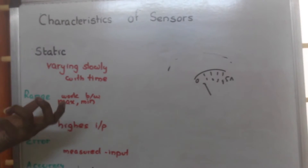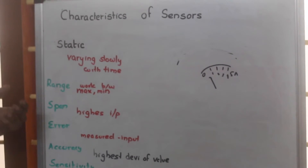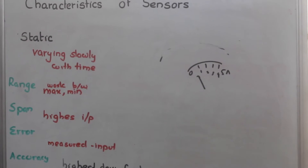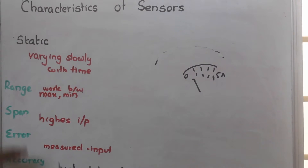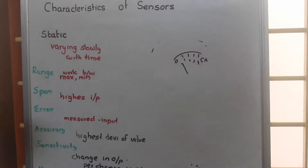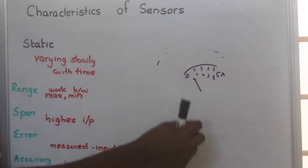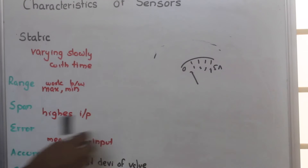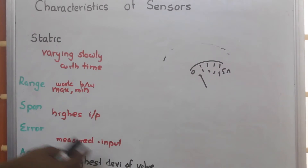So, characteristics of sensors. Here we are going to discuss static characteristics of sensors. Static characteristics means those characteristics which are not changing with respect to time. If at all there is a change, that change will be very slow. Suppose here in discussing static characteristics, there are several characteristics we are going to discuss with an ammeter. In an ammeter, we are able to measure the current from 0 to 5 ampere. That range from 0 to 5 ampere is called range. This particular device is working between that minimum and maximum, and that is called as range.